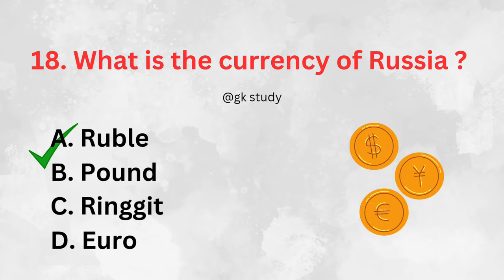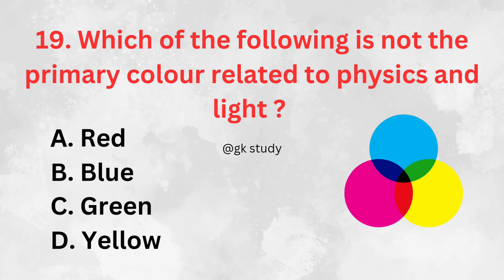Which of the following is not the primary color related to physics and light? Answer is Yellow.